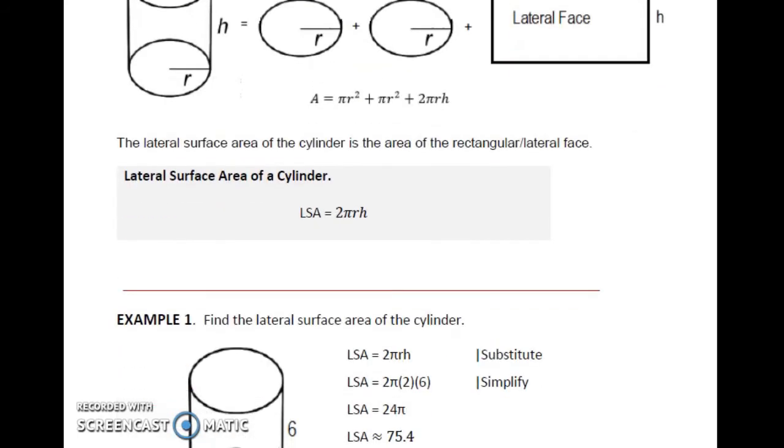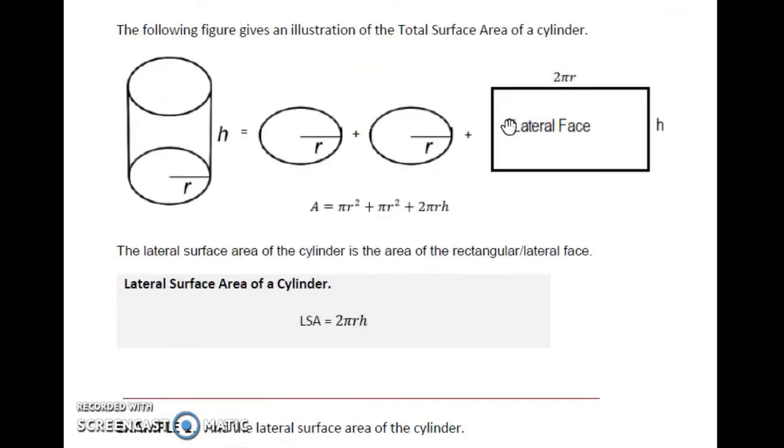The lateral surface area of the cylinder is the area of only this lateral side. So just 2πR times H for LSA.